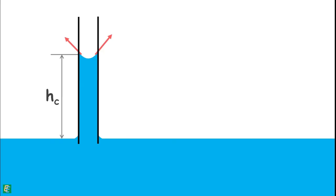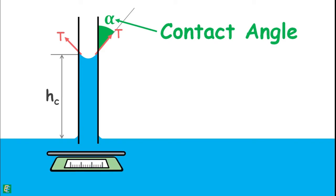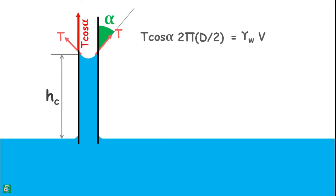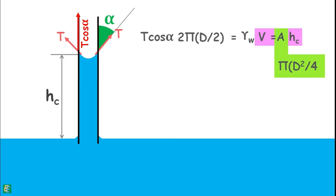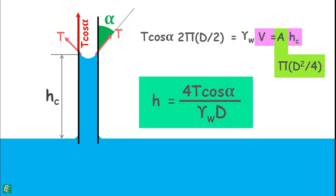The surface tension T that pulls the water column up acts along the tube's perimeter at an angle alpha, known as the contact angle. The force acting downward is the weight of the water column of height hc. Writing the equation of equilibrium: the upward force is the vertical component of surface tension T cos(alpha) over the whole circumference (pi × D), and that equals the weight of the water column — unit weight of water multiplied by the volume, which is area (pi × D² / 4) multiplied by height hc. This gives the height up to which water will rise in a small diameter capillary tube.